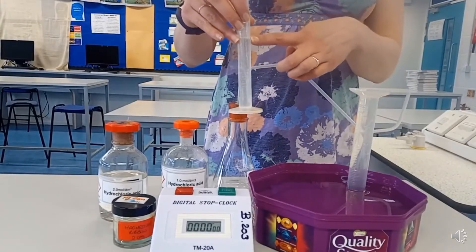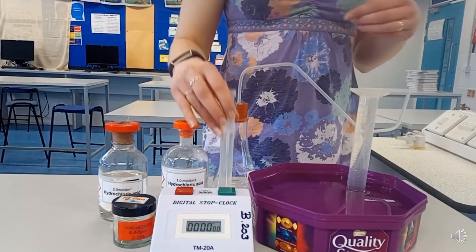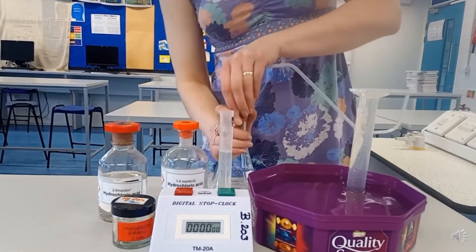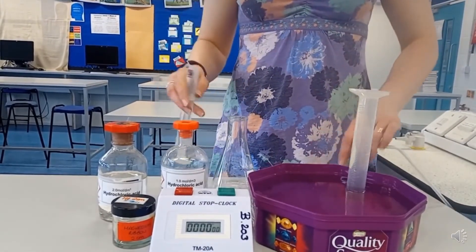I start by measuring 20 centimeters cubed of acid using my measuring cylinder. This needs to be the same every time I complete the investigation, as the volume of acid should be a control variable.